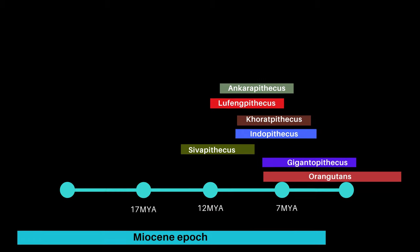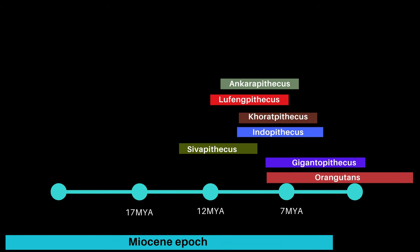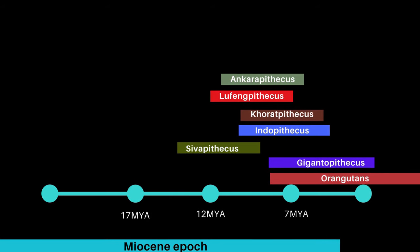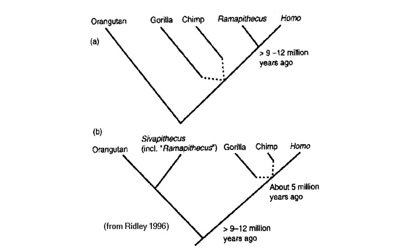Shivapithecus is the most controversial of all Miocene apes. Views about it ranged from some calling it an ancestor of all hominines to it being simply an ancestor to Asian pongines. Initially, Ramapithecus and Shivapithecus were considered alongside early Miocene apes such as Dryopithecus and Proconsul, with Ramapithecus seen as a potential human ancestor and the others as proto-great apes.